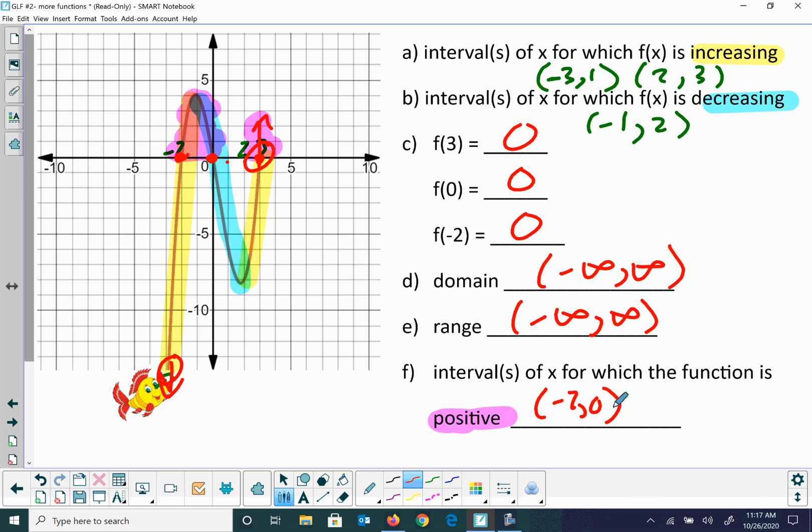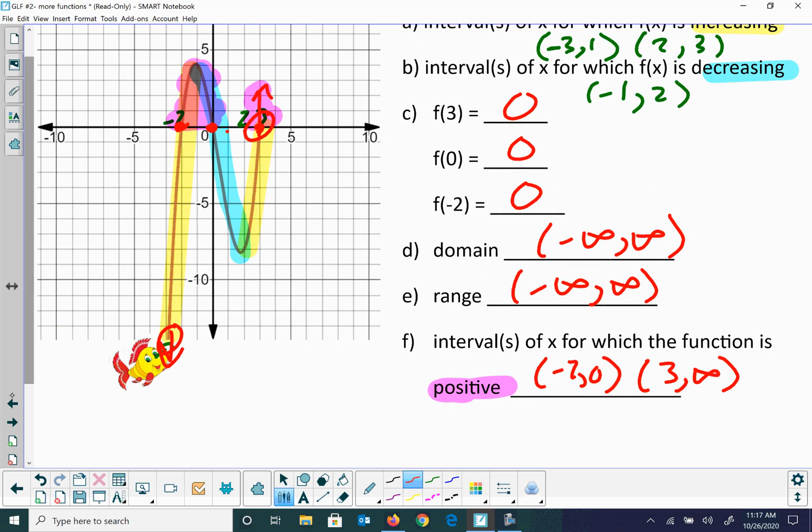And then from, looks like from three to infinity, because that arrow will keep going up. Again, let's ask about this in class because this is definitely different information to talk about.